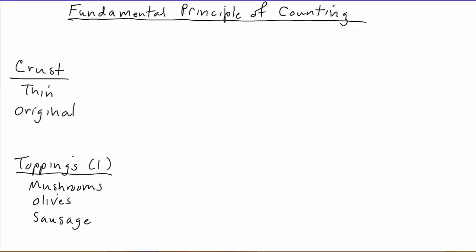In this video, we're going to discuss some motivation for the fundamental principle of counting. Suppose we have the following scenario: we're going to order a pizza, and we have two choices to make. The first choice is what kind of crust we want — there are only two options, thin crust and original crust. The second choice is which topping we have; we can get exactly one topping, and the only three possibilities are mushrooms, olives, or sausage. We want to know how many different combinations of pizzas we can choose from.